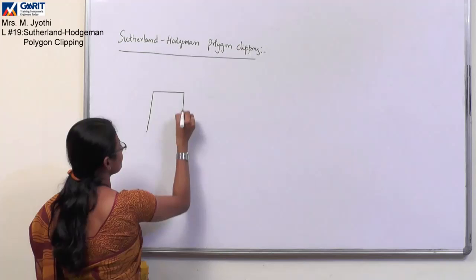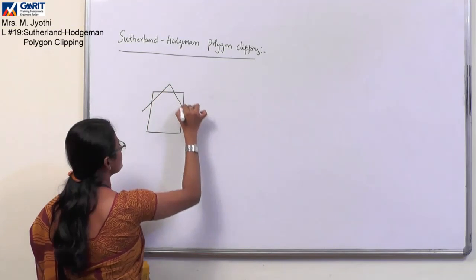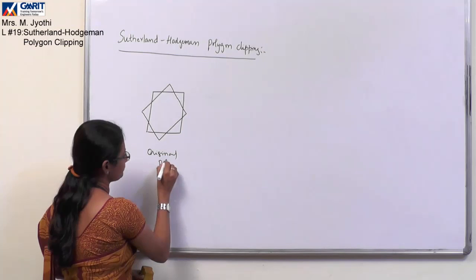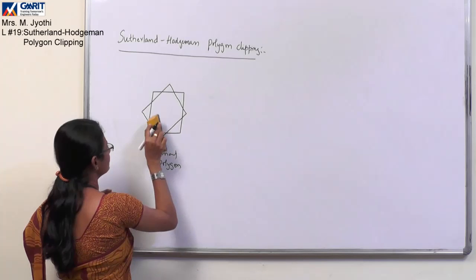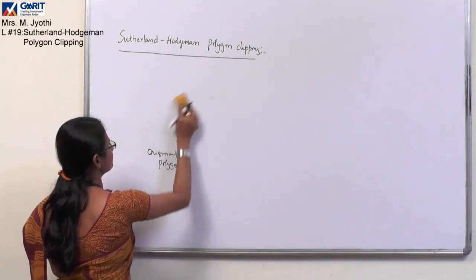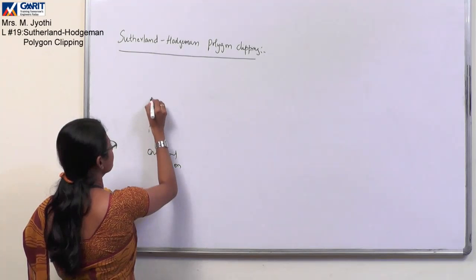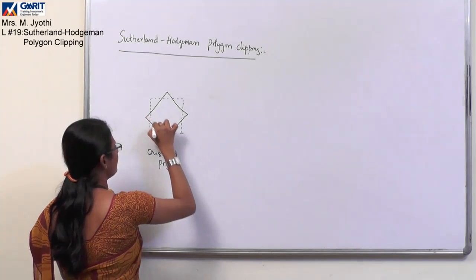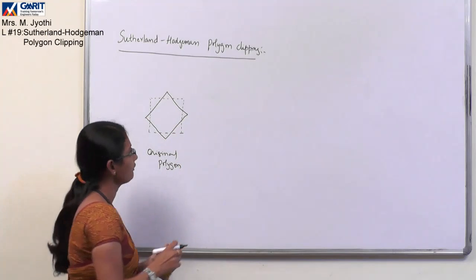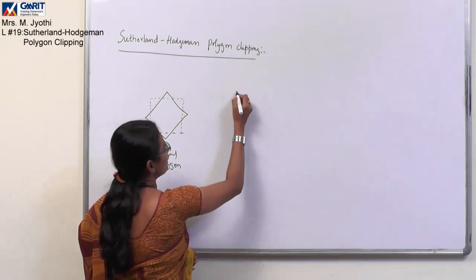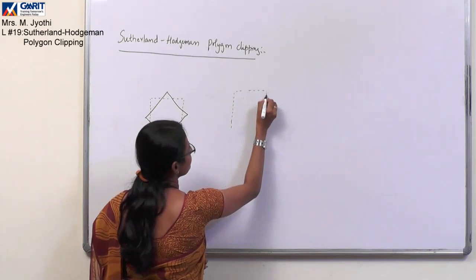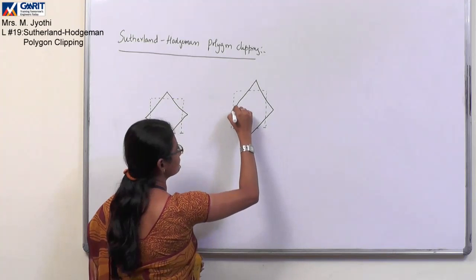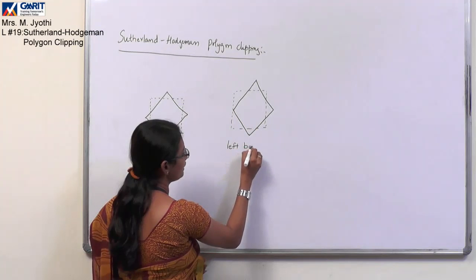Let's take an example. Suppose this is your clipping window and this is your polygon. This is your original polygon represented by a dashed line. This is your clipping window. Now let's consider the left boundary of your clipping window. After performing left clipping, the image may look like this.